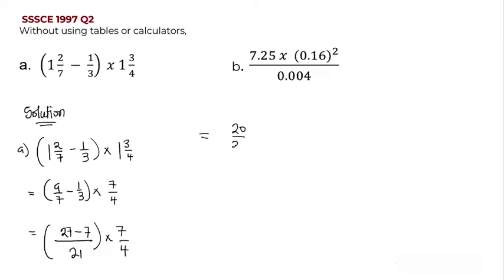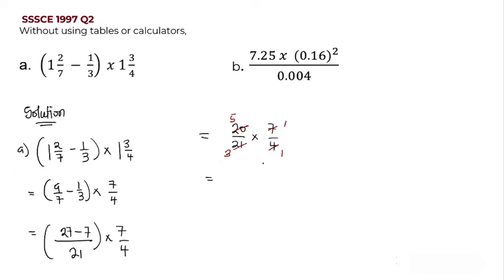Twenty-seven minus seven gives twenty, over twenty-one, multiplied by seven over four. Cancelling: four goes into itself once, four goes into twenty five times; seven goes into itself once, seven goes into twenty-one three times. After cancelling, we have five over three multiplied by one over one, which equals five over three.